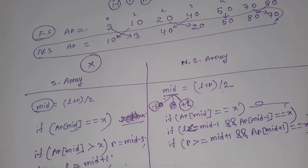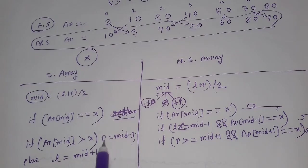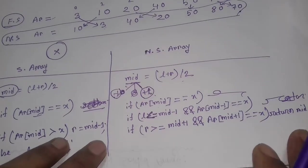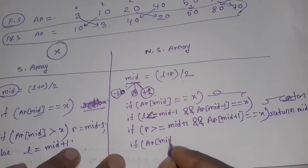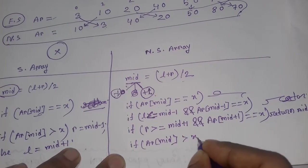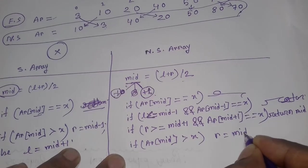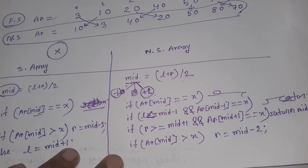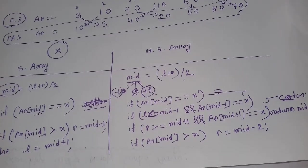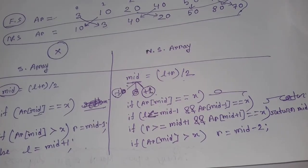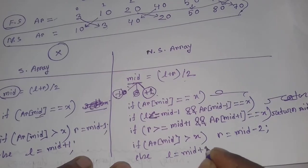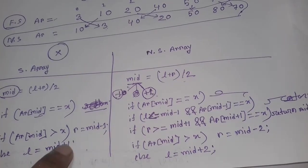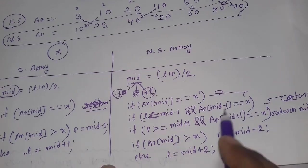If arr[mid] is less than x, we set l equal to mid plus 2. Note that we skip mid-1 and mid+1 because we already checked them. So we jump by 2: r = mid - 2 or l = mid + 2.